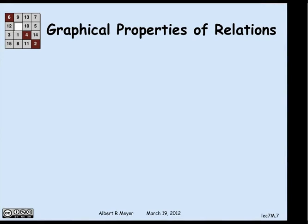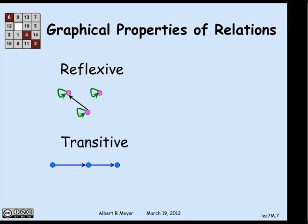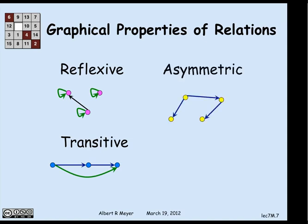Let's illustrate some of these axioms in terms of graphs, which can help to remember them. Reflexive means that in a digraph there is a little self-loop from every vertex to itself — a length-one edge from a vertex to itself. Transitive means that whenever there's a path of length two from one vertex to another, there is also a direct edge from that vertex to its target. Once there's an edge wherever there's a path of length two, it follows by induction that there's an edge wherever there's a path of any length — that's what transitive means.